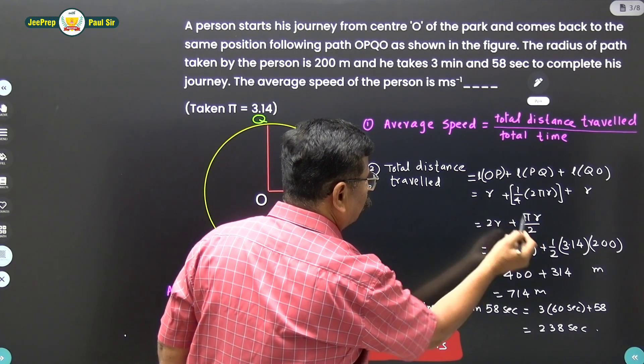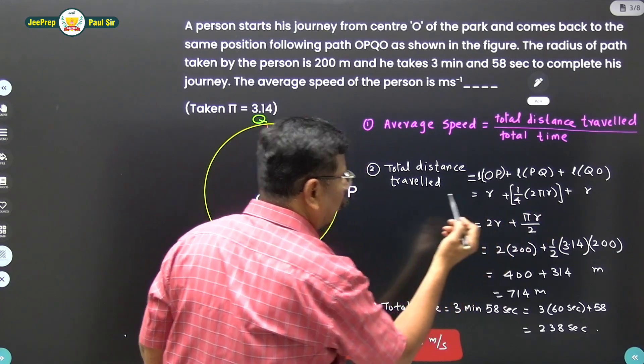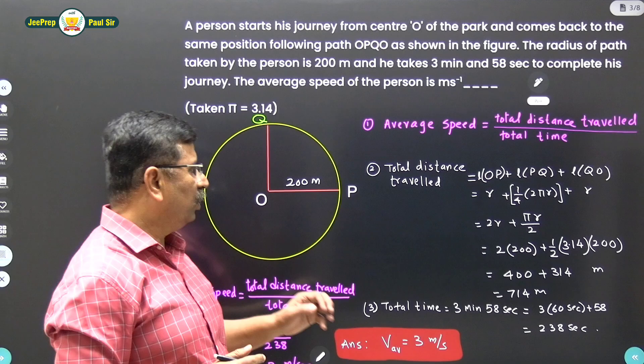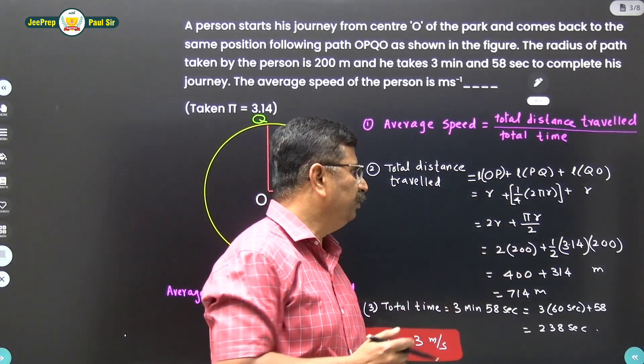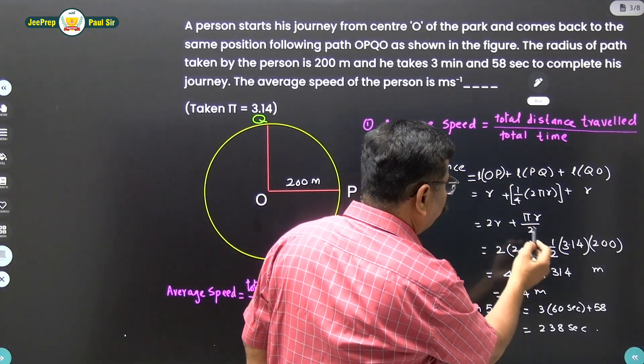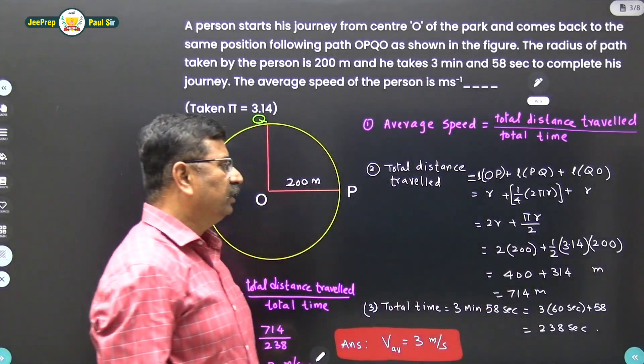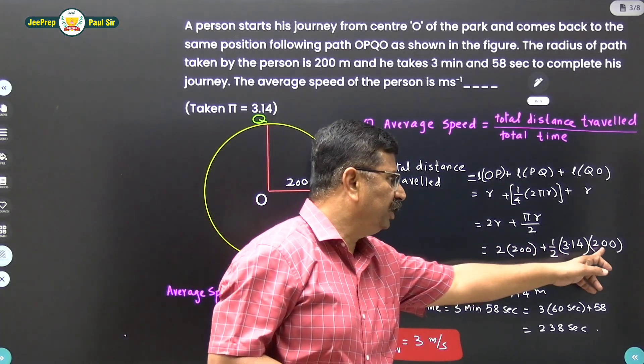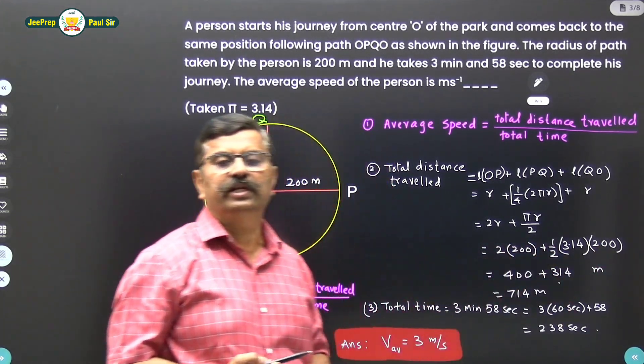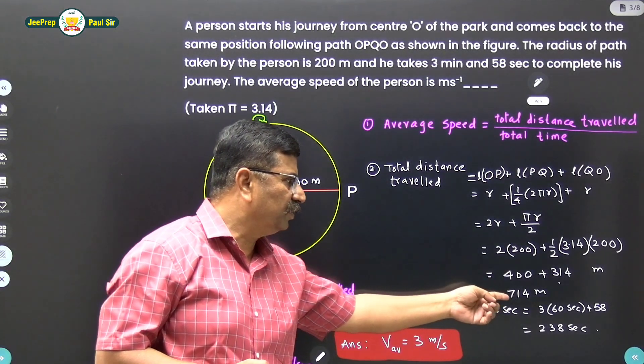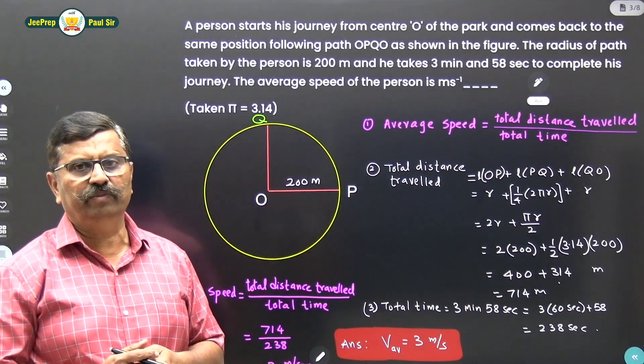So you will get πR/2 and this R plus R is 2R. Now what is the value of R? That is 200 meter. Therefore 2 into 200 meter plus 1/2 into value of π is 3.14 and value of R is 200, then this is 3.14 into 100, this becomes 400 + 314 meter. So therefore total distance traveled by the person is 714 meter.